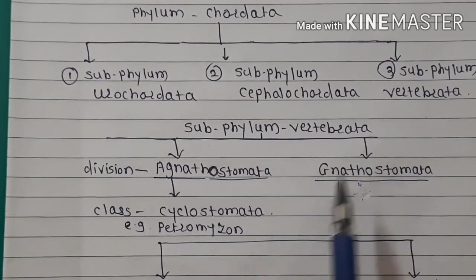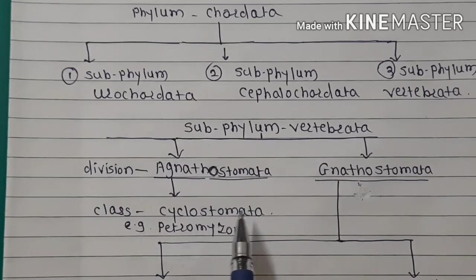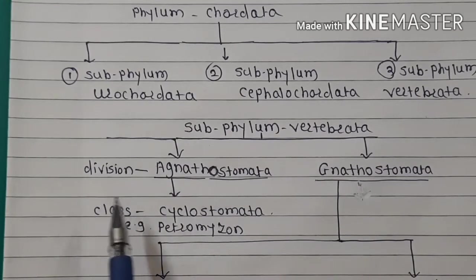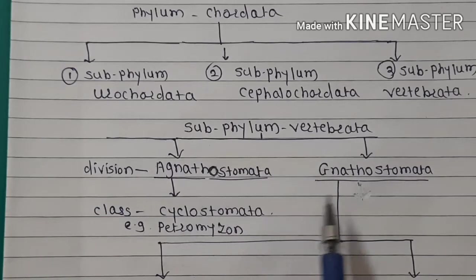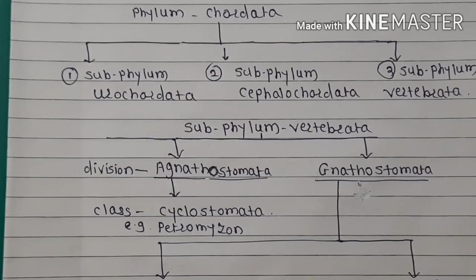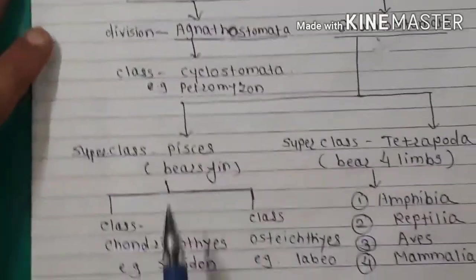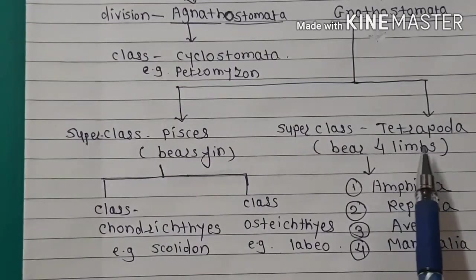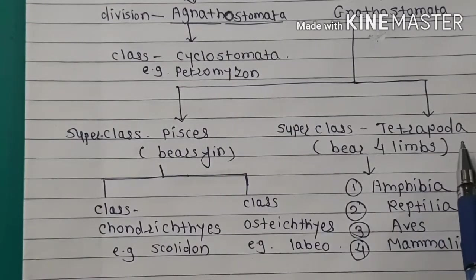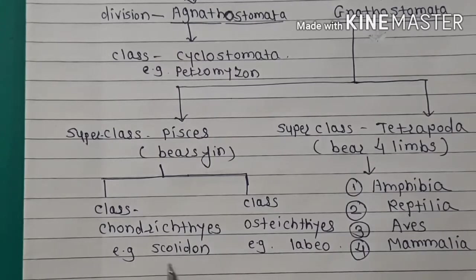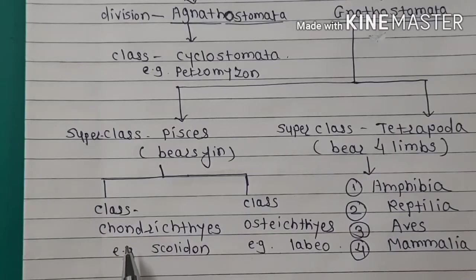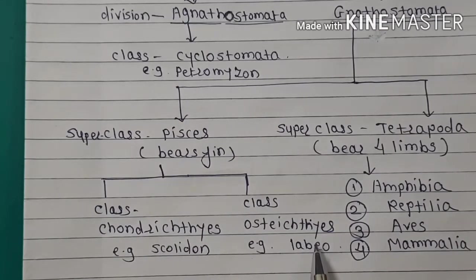The subphylum Vertebrata is again divided into two divisions: Agnathostomata and Gnathostomata. The Gnathostomata is divided into Superclass Pisces and Superclass Tetrapoda. The class Pisces is divided into Class Chondrichthyes and Class Osteichthyes.